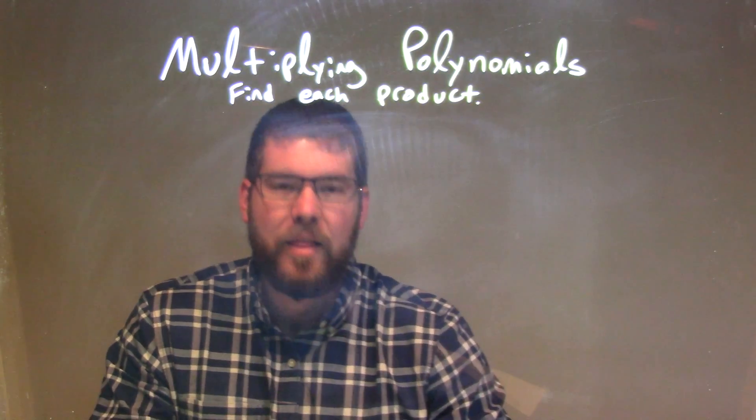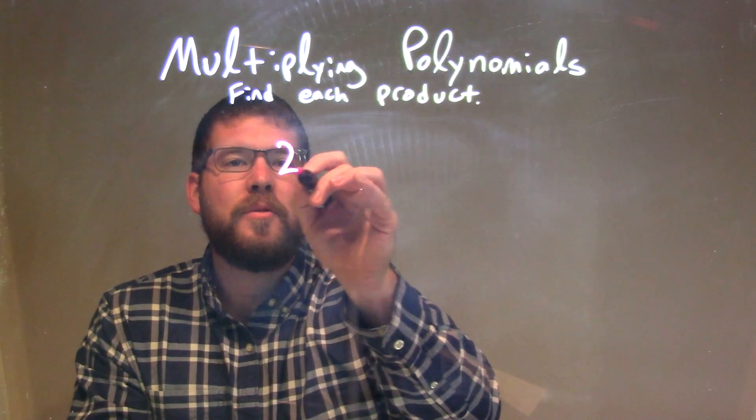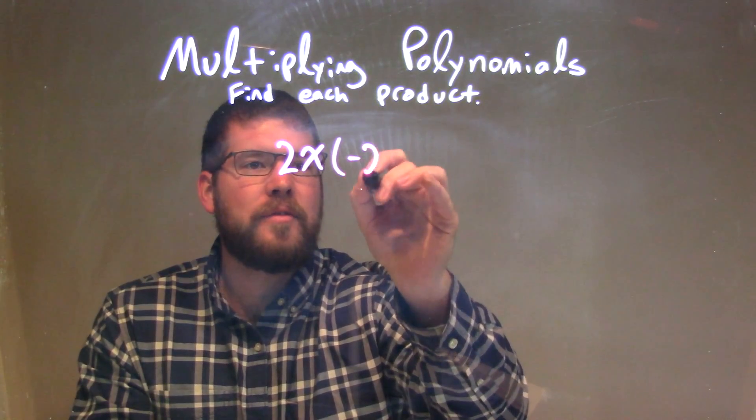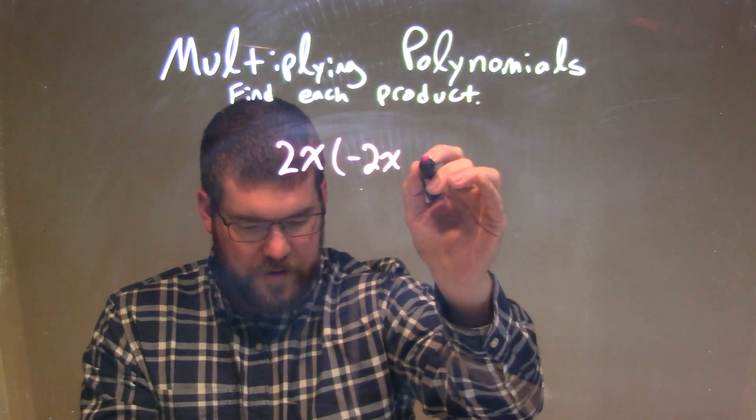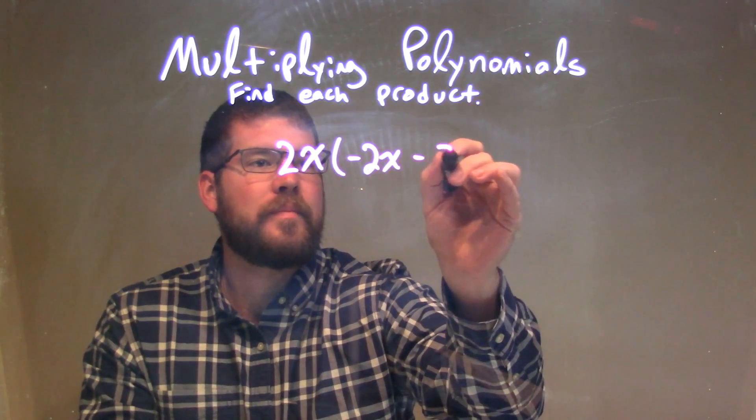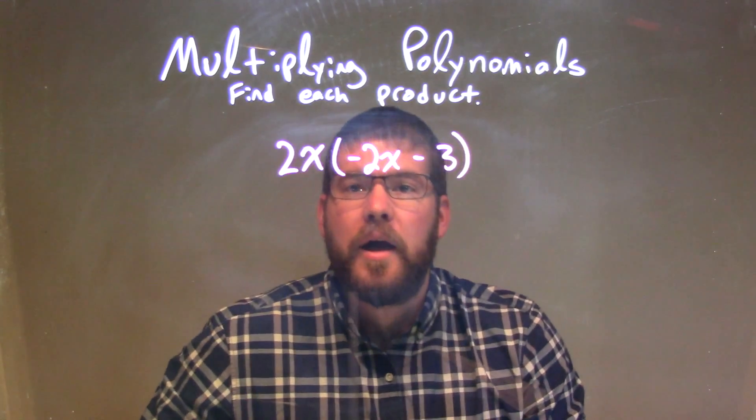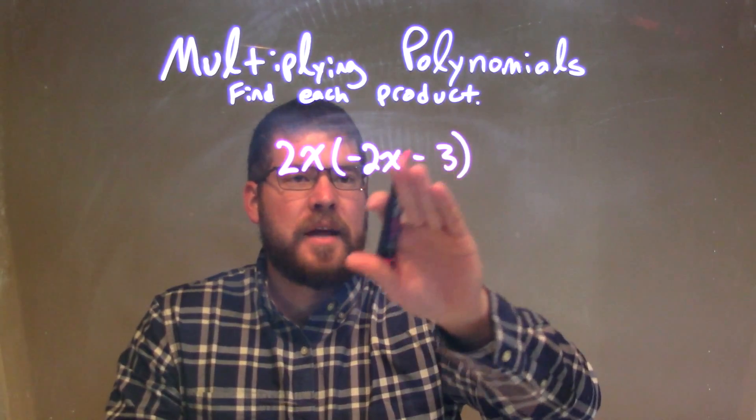So if I was given this problem, 2x times negative 2x minus 3. Well, I cannot simplify anything inside of this parenthesis.